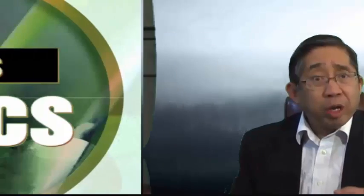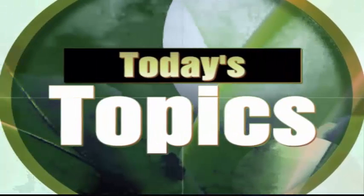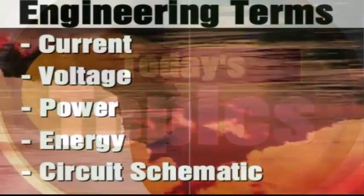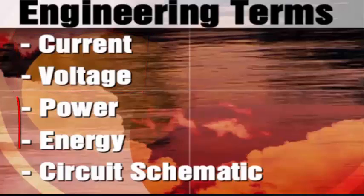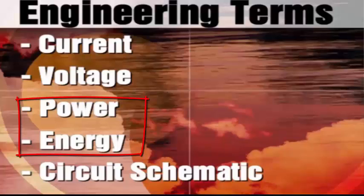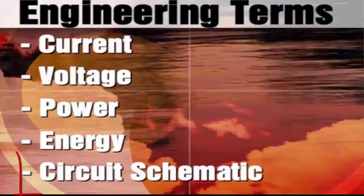Hello, Dr. J here. We're going to get started with some basics in electrical engineering. What I'll be talking about today are two important electrical engineering variables, namely voltage and current. We're also going to see how these electrical quantities are related to power and energy. Also, we'll briefly see what is meant by a schematic or circuit diagram.